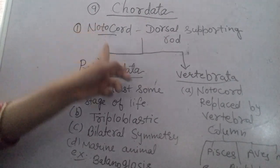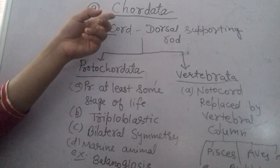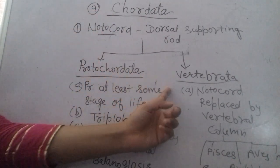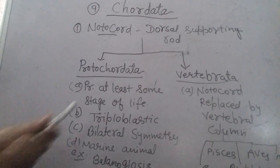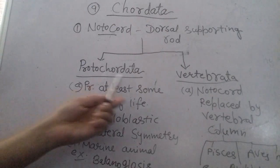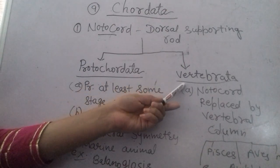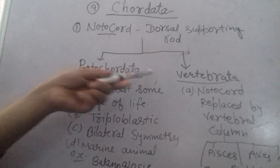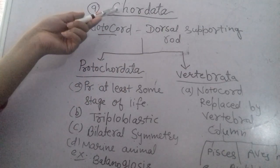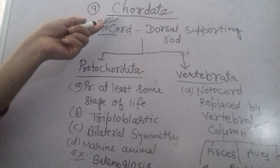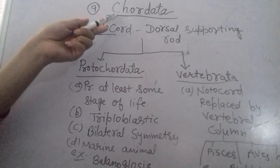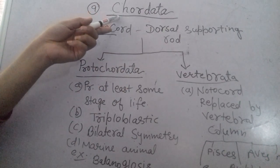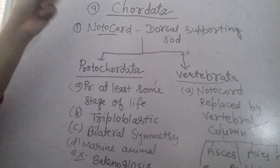Now, based on the presence of the Notochord, the Chordata group is divided into two parts: Protochordata and Vertebrata. These are the two main subdivisions of the Chordata phylum in the animal kingdom.